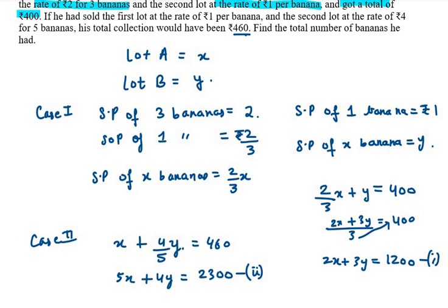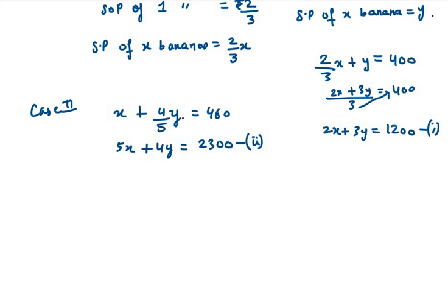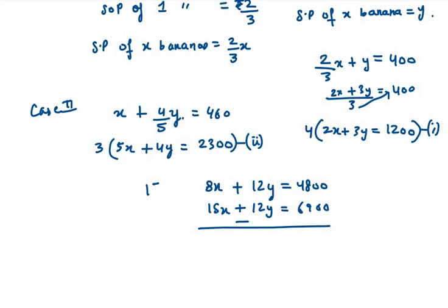Now we need to solve this equation to find the value of x and y. I will be using elimination method here. I will multiply the first equation by 4 and the second equation by 3. My first equation becomes 8x plus 4 times 3 is 12y equals 1200 times 4 is 4800. The second equation is 15x plus 12y equals 2300 times 3 is 6900. Now we need to eliminate y. 8x minus 15x is minus 7x. 4800 minus 6900 is minus 2100. So x value will be 300.